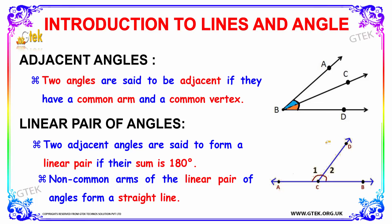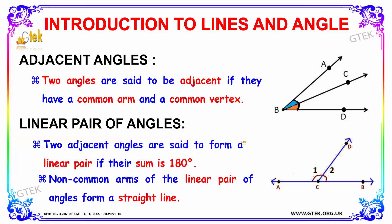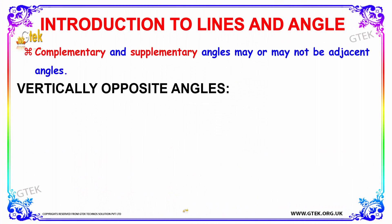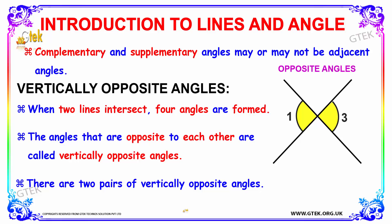Now let's discuss about linear pair of angles. Two adjacent angles form a linear pair if their sum is 180 degrees. The non-common arms of the linear pair of angles tend to form a straight line. Note that complementary and supplementary angles may or may not be adjacent angles in some cases.